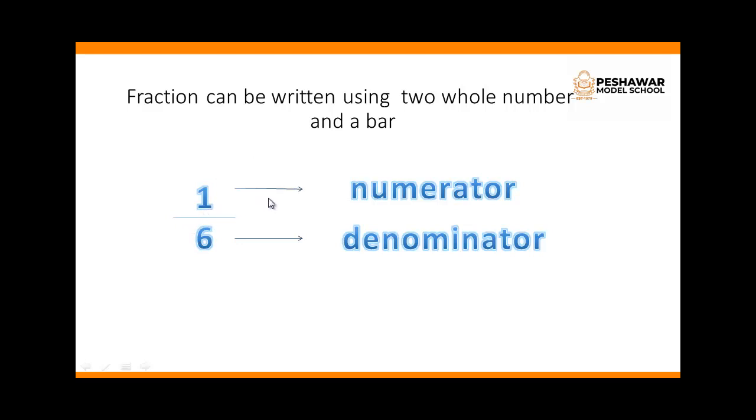The number above the Fraction Bar is known as Numerator and the number below the Fraction Bar is known as the Denominator.